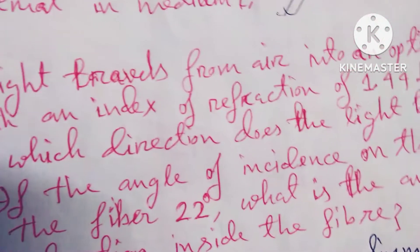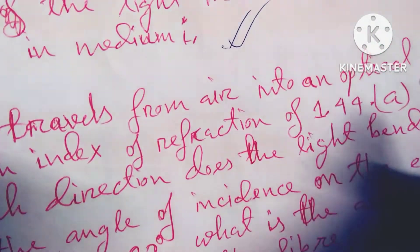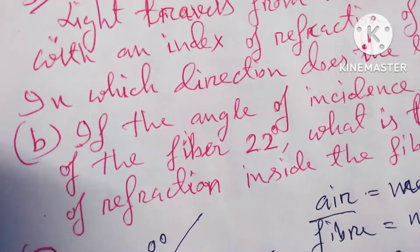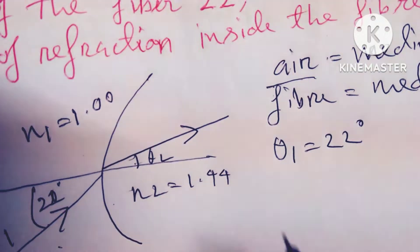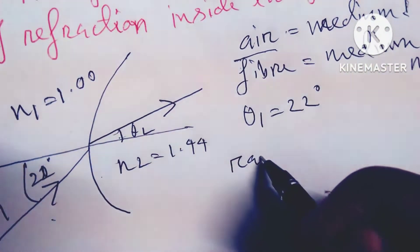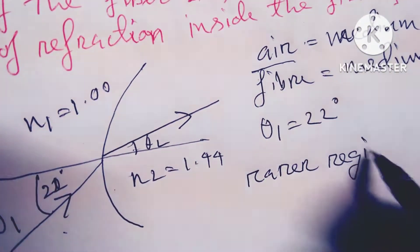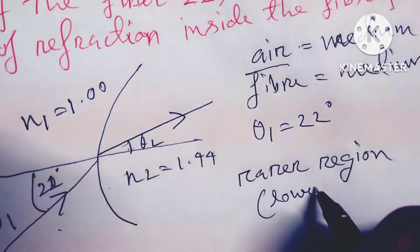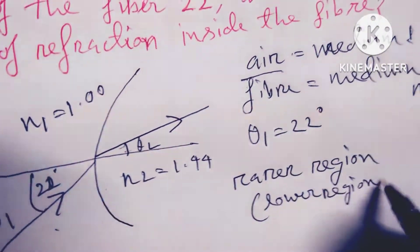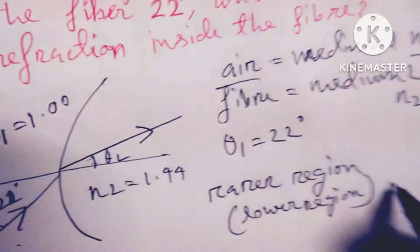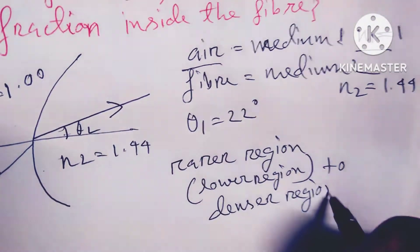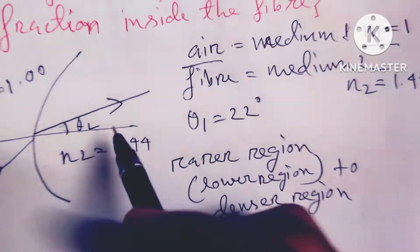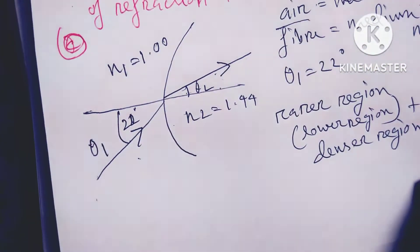The first question asks: in which direction does the light bend? Since the light is traveling from a rarer region — a lower index region — to a denser region, which is the fiber, it will bend towards the normal.